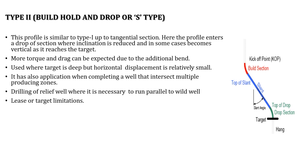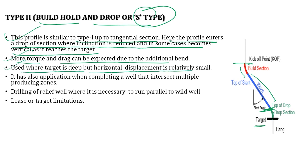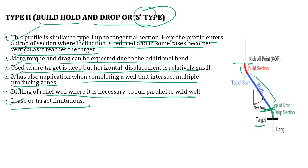Coming to Type 2, or build-hold-drop, commonly termed as S-type. This profile is similar to Type 1 up to the tangential section, but then enters a drop section where inclination is reduced and in some cases the well is brought back toward vertical as it reaches the target. More torque and drag can be expected due to the additional bend. It is used where the target is deep but horizontal displacement is relatively small, when completing a well through multiple producing zones, drilling of relief wells where it is necessary to run parallel to the wild well, or for lease and target limitations.